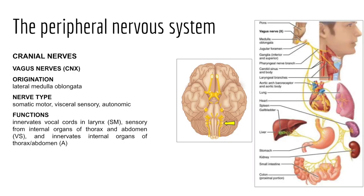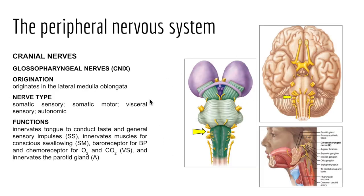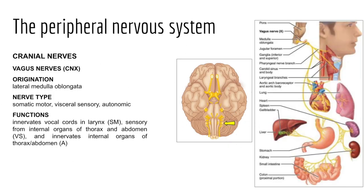Cranial nerve ten is the vagus nerve, the only pair of cranial nerves extending beyond the head and neck. Fibers extend from the medulla oblongata, exit the skull via the jugular foramen, and descend through the neck to the heart, lungs, and abdominal cavity. It is a mixed nerve: motor functions are parasympathetic, regulating the heart, lungs, and visceral organs; sensory functions include input from visceral organs, baroreceptors, chemoreceptors, and taste buds of the posterior tongue, epiglottis, and pharynx.